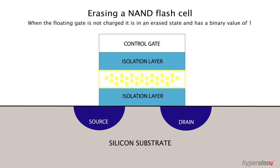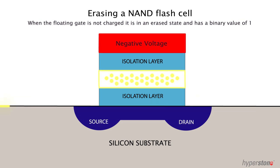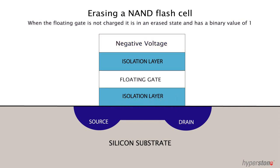To erase the charge stored on the floating gate, a high voltage is applied across the source and drain while a negative voltage is applied to the control gate. This causes the electrons to tunnel back off the floating gate through the isolation layer and into the channel.